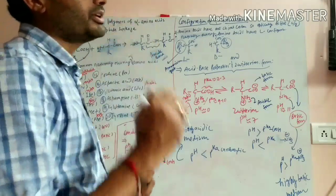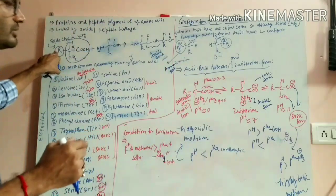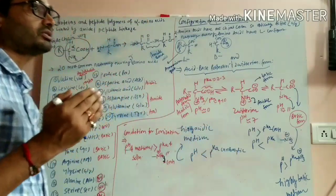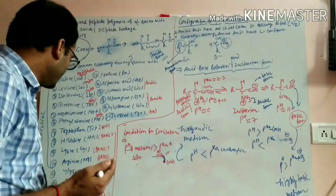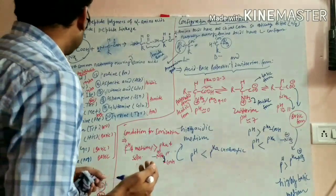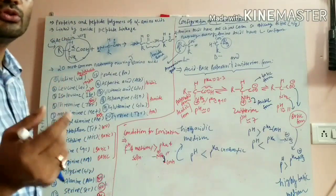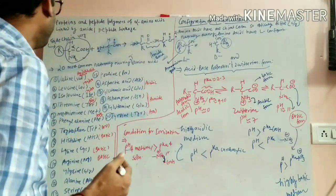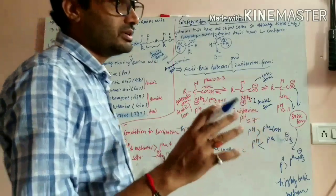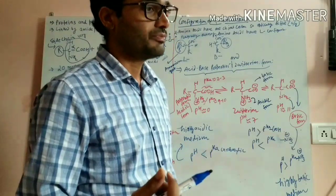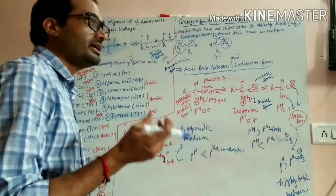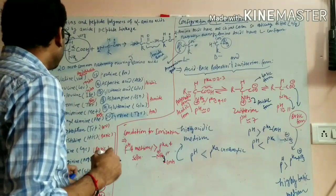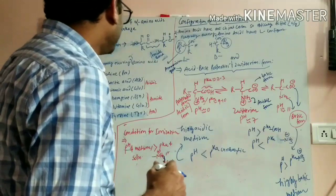Another categorization is based on nucleophilic behavior. If the side chain contains groups that can act as a nucleophile, like an OH group or SH group, such amino acids are called nucleophilic amino acids. Examples are alanine, serine, and cysteine. Amino acids not dissolved in water are called hydrophobic amino acids, such as valine (VAL), leucine (LEU), and isoleucine (ILE).